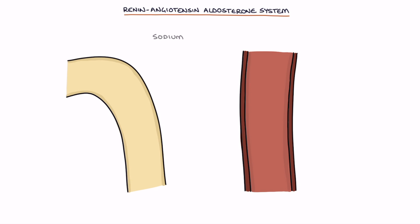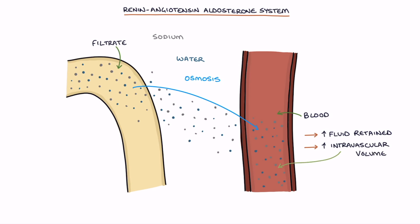When sodium is reabsorbed from the filtrate back into the blood, water follows it by osmosis. This leads to more fluid retained in the body, increased intravascular volume or the volume of fluid inside the blood vessels, and increased blood pressure due to the greater volume of fluid inside the blood vessels.